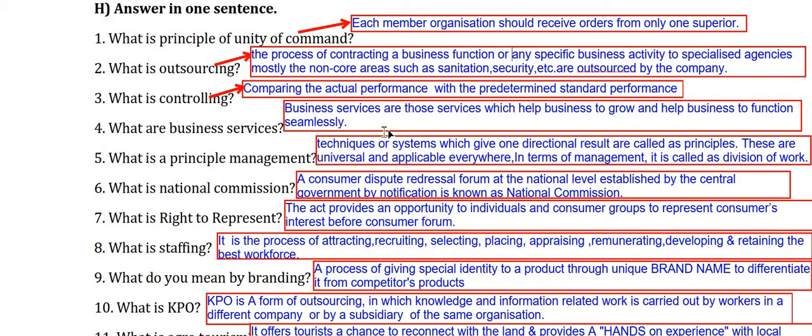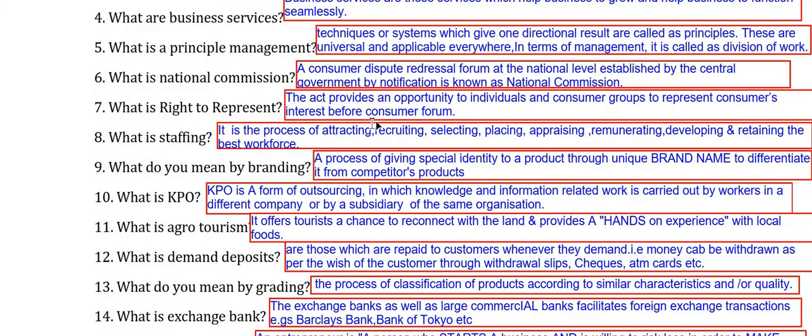What is a Principle of Management? A principle is nothing but techniques or systems which give one directional result. They are universal and applicable everywhere. In terms of management, an example is division of work. Together these form the Principle of Management.